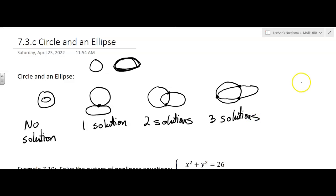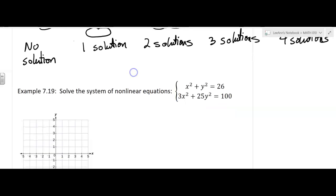And you could have a circle. That one was going good, but oh well. And then an ellipse, it goes something like that, where it intersects in four places and there are four solutions. So those are the possibilities for a system that has a circle and an ellipse.